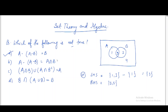We can verify the other options as well. For option (b), the left-hand side is A minus (A minus B), which we just calculated as {3}. The right-hand side, A intersection B, is also {3}. So both sides are equal — this option is true.